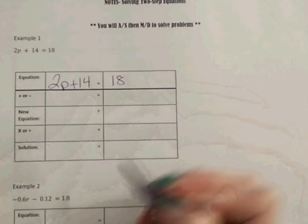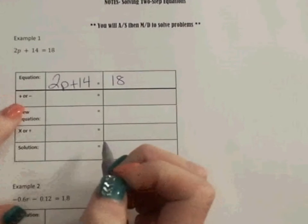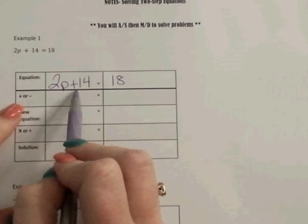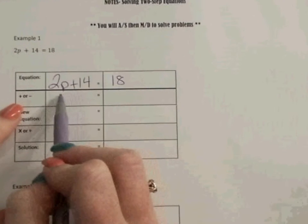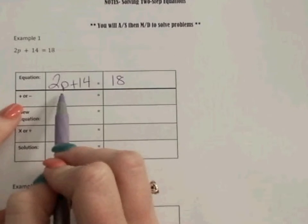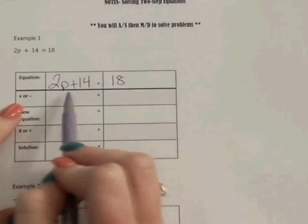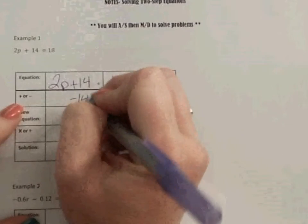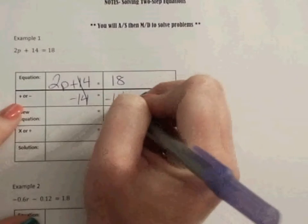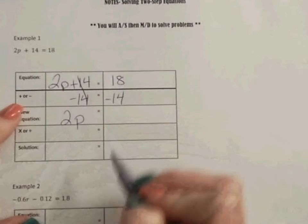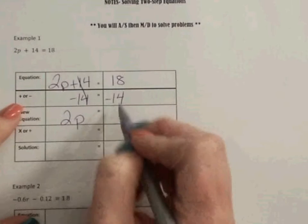Like Ms. Hall said, we're going to add or subtract first. Because they added 14 to it, I need to get to this variable p by itself. So I'm going to subtract 14 from both sides. When I do that, I'm left over with the 2p on the left, and 18 minus 14 is 4.